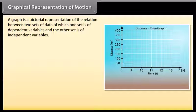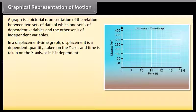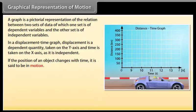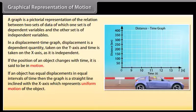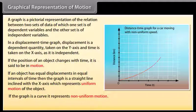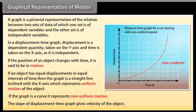A graph is a pictorial representation of the relation between two sets of data — one set of dependent variables and the other of independent variables. In a displacement-time graph, displacement is the dependent quantity taken on the y-axis and time is taken on the x-axis. If an object has equal displacements in equal intervals of time, the graph is a straight line inclined with the x-axis, representing uniform motion. If the graph is a curve, it represents non-uniform motion. The slope of the displacement-time graph gives the velocity of the object.